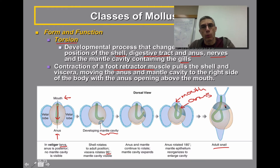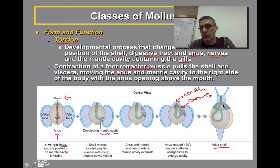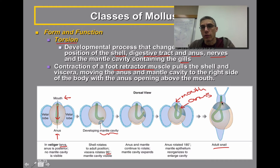There are a lot of theories as to why torsion would happen, because to have your anus very close to your mouth doesn't quite make much sense — waste material removed from the body could possibly be taken back in. One idea is that torsion occurred to make sure the mantle cavity would move to the anterior region, providing more space to bring in the head region, which must be protected from predators. Without this mantle cavity, it would be really hard for that soft body to retract back into the shell.